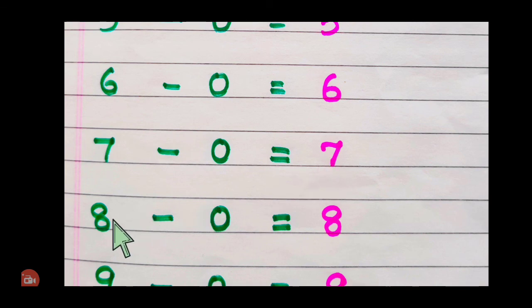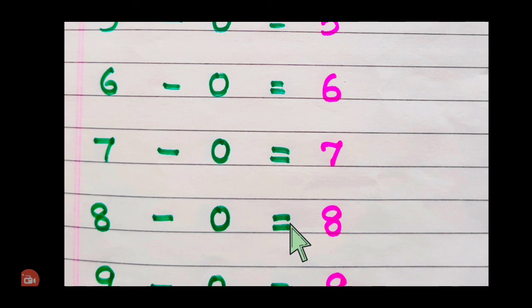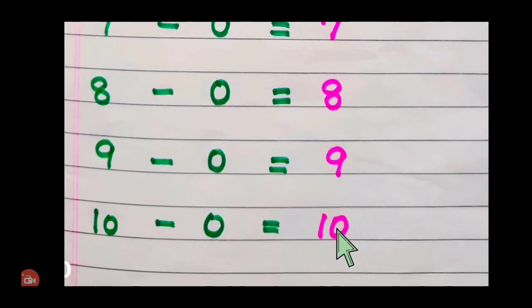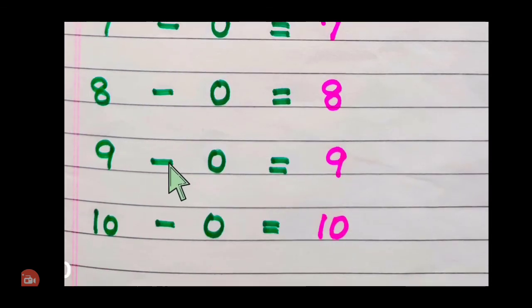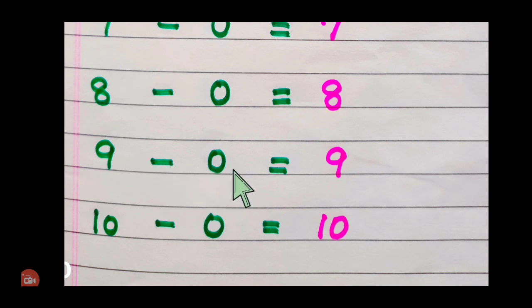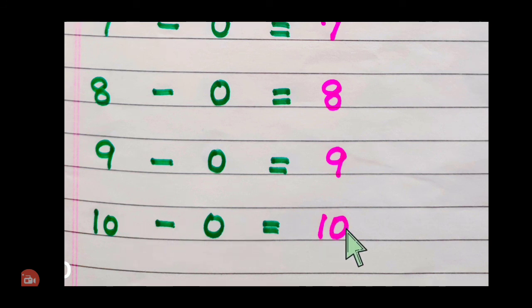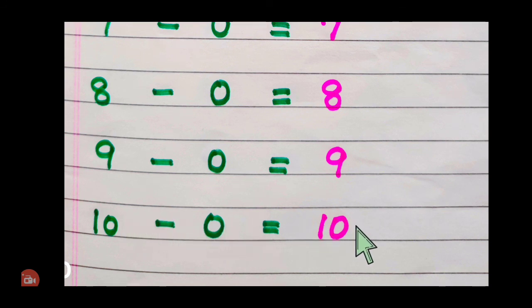8 minus 0, 8. 8 minus 0, 8. 9 minus 0, 9. 9 minus 0, 9. 10 minus 0, 10. 10 minus 0, 10. Okay children, let's read a little more faster.